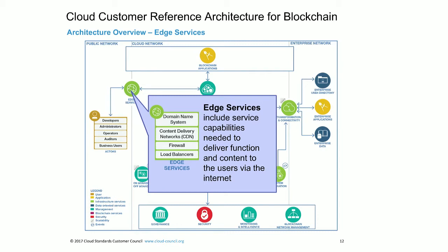The next component is Edge Services. There is a need to protect information coming into the blockchain network environment. Edge services handle this task, allowing data to flow safely from the outside world into the cloud environment and enterprise. Typical components comprising edge services include firewalls, load balancers, and content delivery networks.